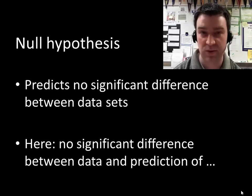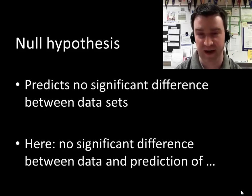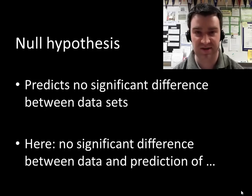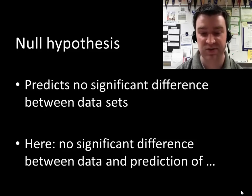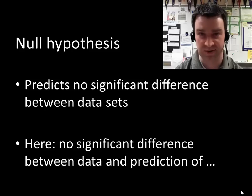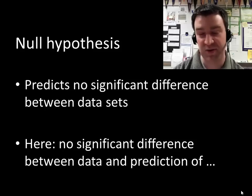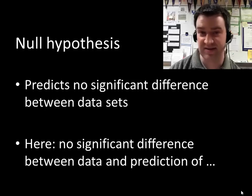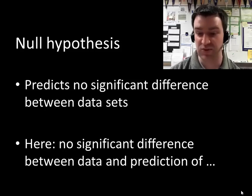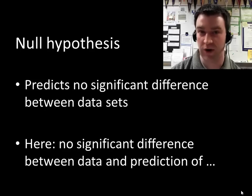Like all statistics, we want to set up a null hypothesis first. The null hypothesis is typically formatted the same way — it predicts no significant difference between some sets of data. In this case, we're predicting no significant difference between our actual observed data and what we predicted. Here, we're actually trying to support the null hypothesis, unlike the t-test where we tried to reject it.